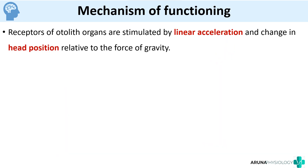How do the receptors of utricle and saccule get activated? The receptors of otolith organs are stimulated by linear acceleration — for example, moving forward in a car or moving down in a lift. They also get activated when the head position changes relative to the force of gravity, such as when you tilt your body. So whenever there is linear acceleration or a change in position of the head, the otolith organs get activated.